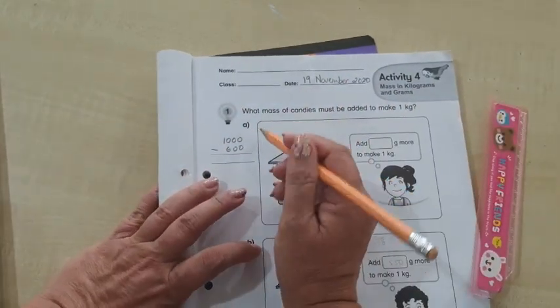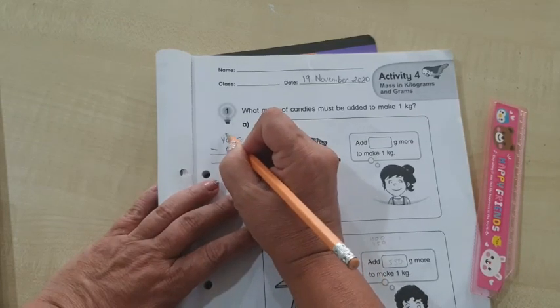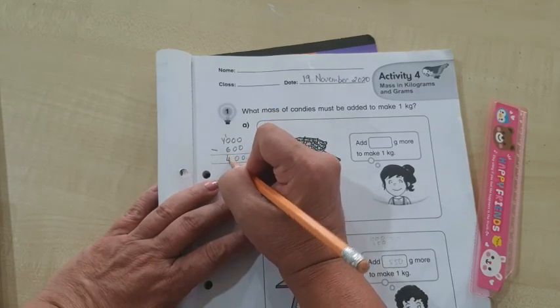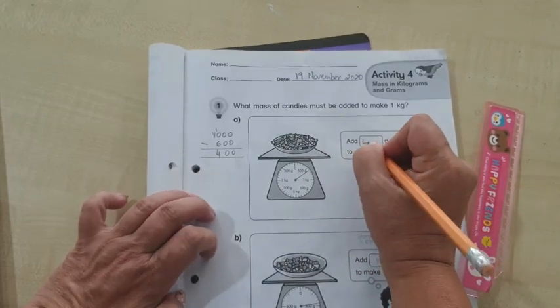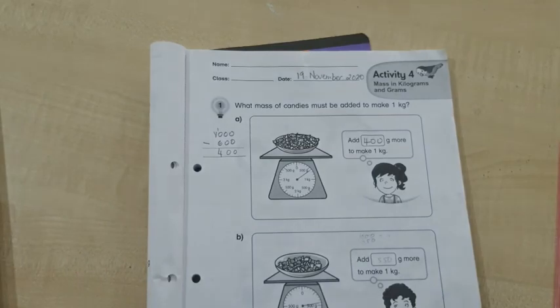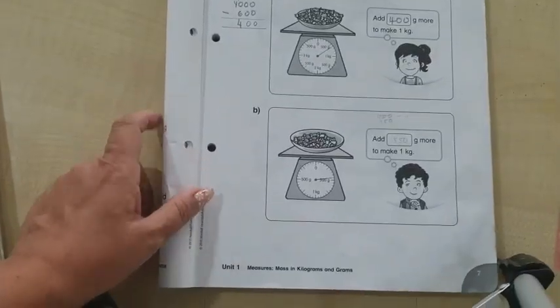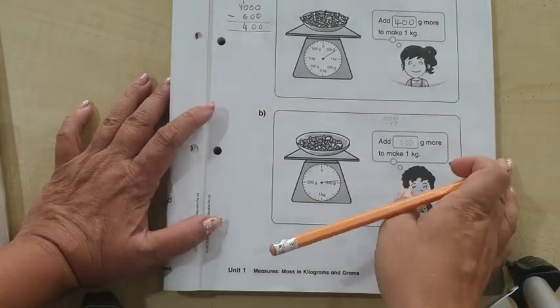So the answer is 400. 400 grams need to be added to make 1 kg. Alright, the next picture.